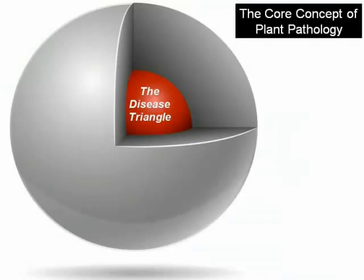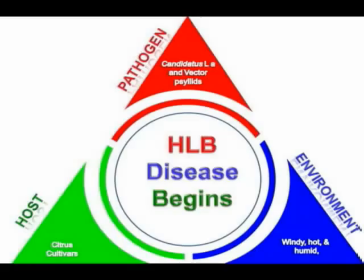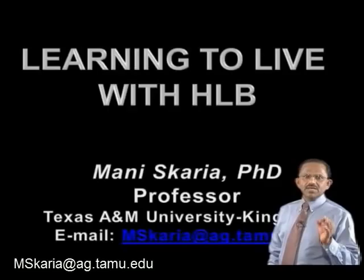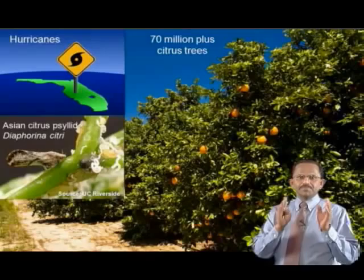I want to explain the disease triangle using a citrus disease called Huanglongbing, or HLB in short, as a model. The common name is citrus greening disease. I want to discuss some core concepts in the presentation 'Learning to Live with HLB.'